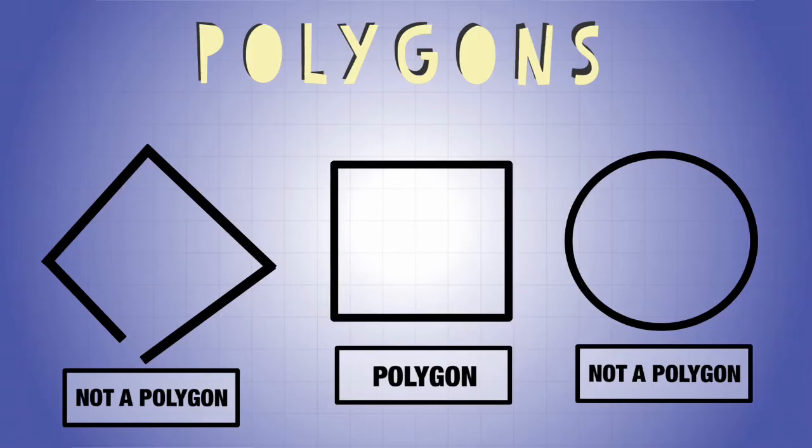...it's a closed figure. You can see that there are no openings around it, and it's composed of only line segments. So a polygon is a figure, a two-dimensional figure, that is composed of only line segments that is a closed figure. So a two-dimensional closed figure that is composed of only line segments.